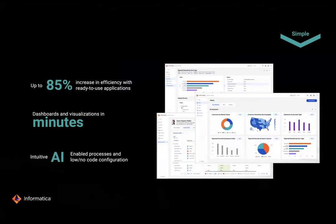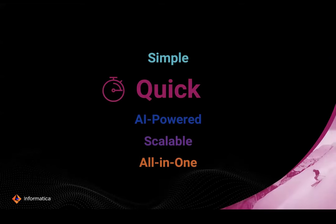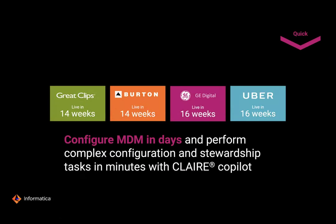By simple, we mean being able to configure the software in a much easier way — changing the configuration experience so that you don't have to configure separate products. You have the ability to leverage AI to do much of the configuration. By quick, we mean we have the ability to go live very quickly. Some of our current customers: Great Cliffs and Burton's went live in 14 weeks — not just configuration, but actual testing and production. GE Digital and Uber went live in 16 weeks, actually getting usage and business value within that time.